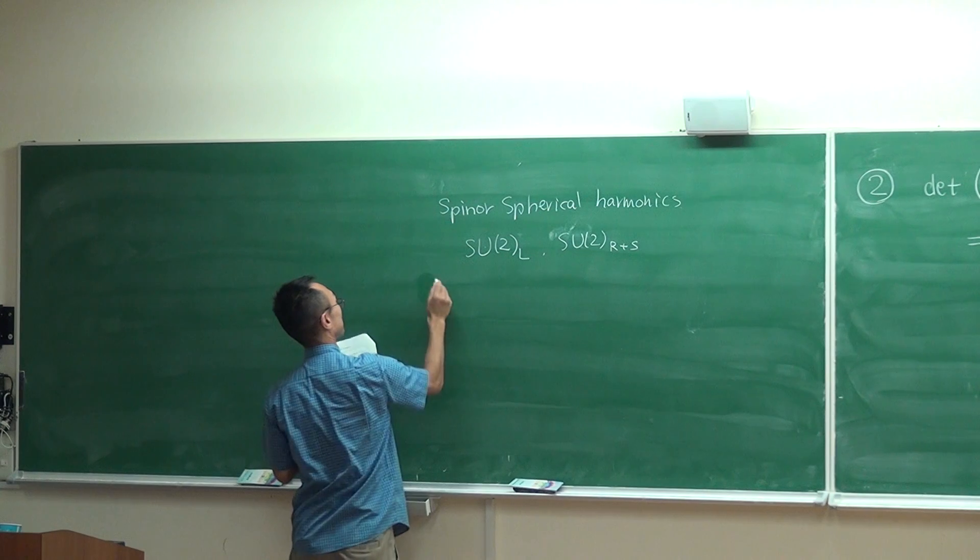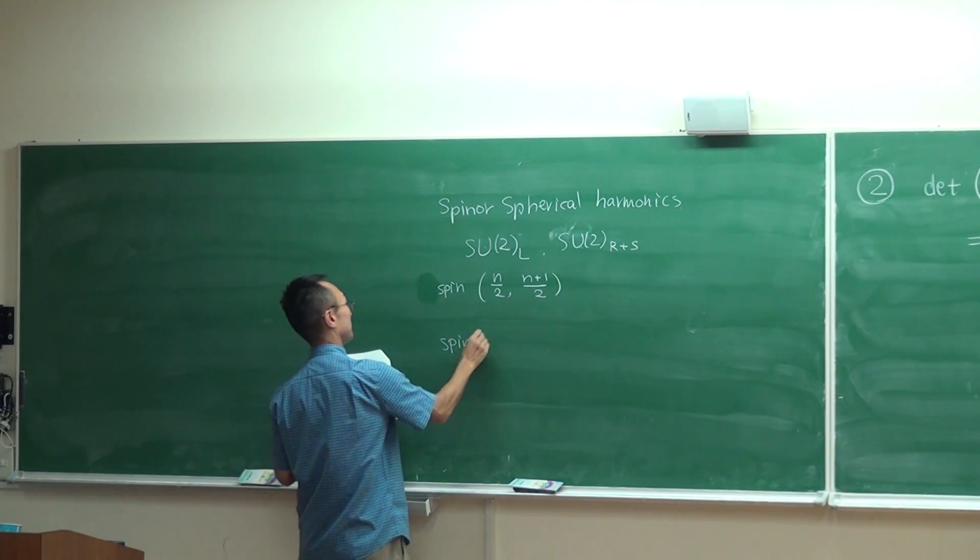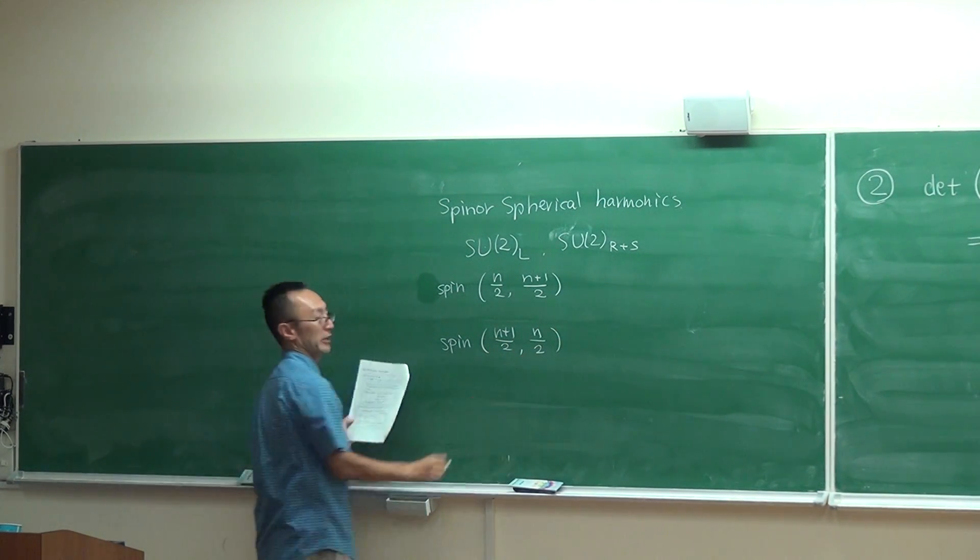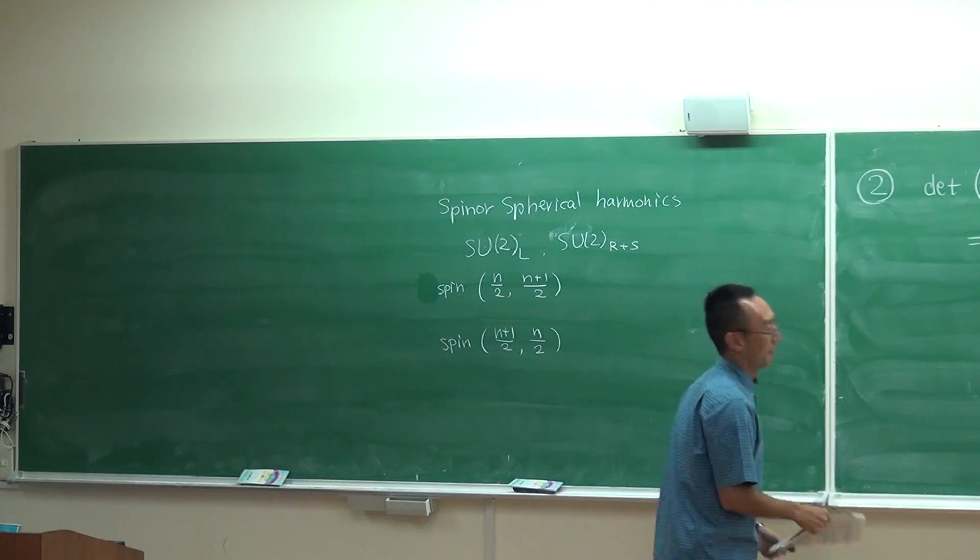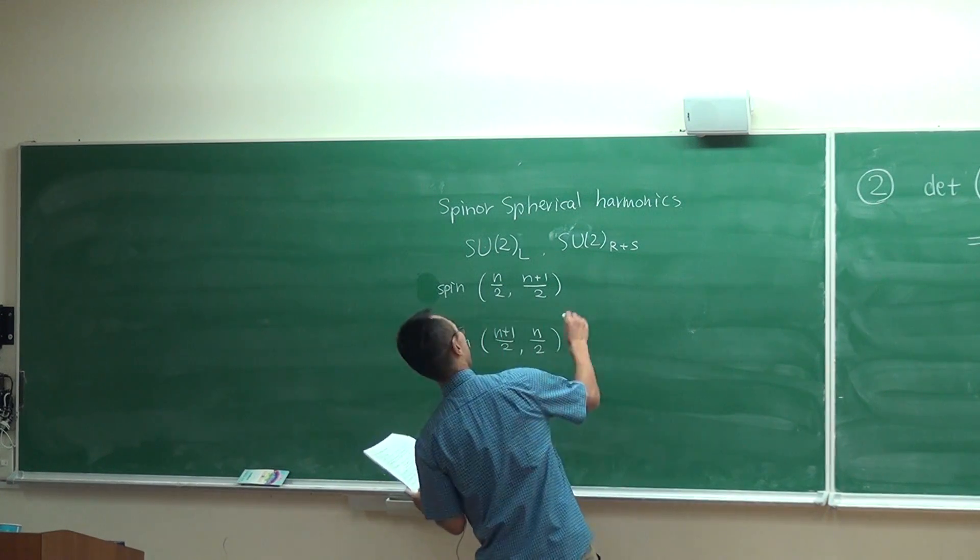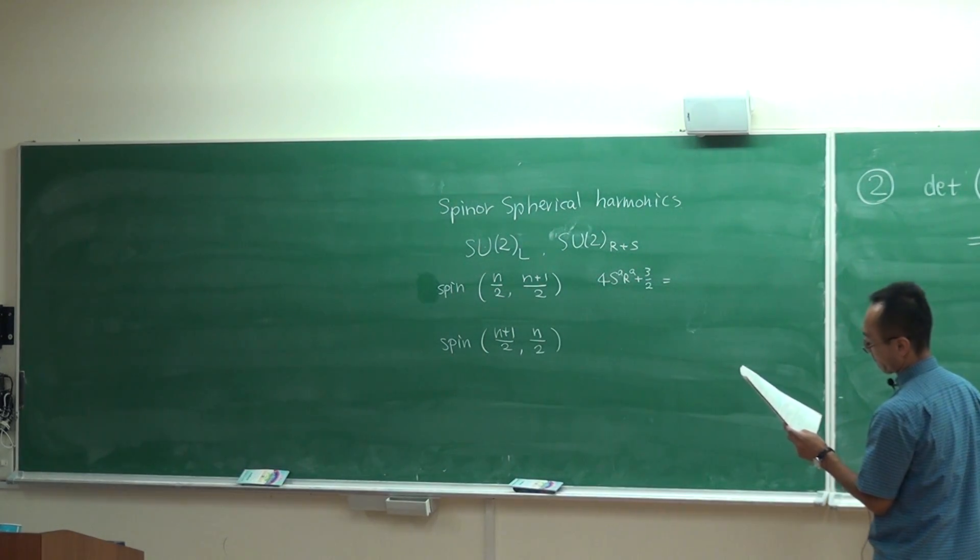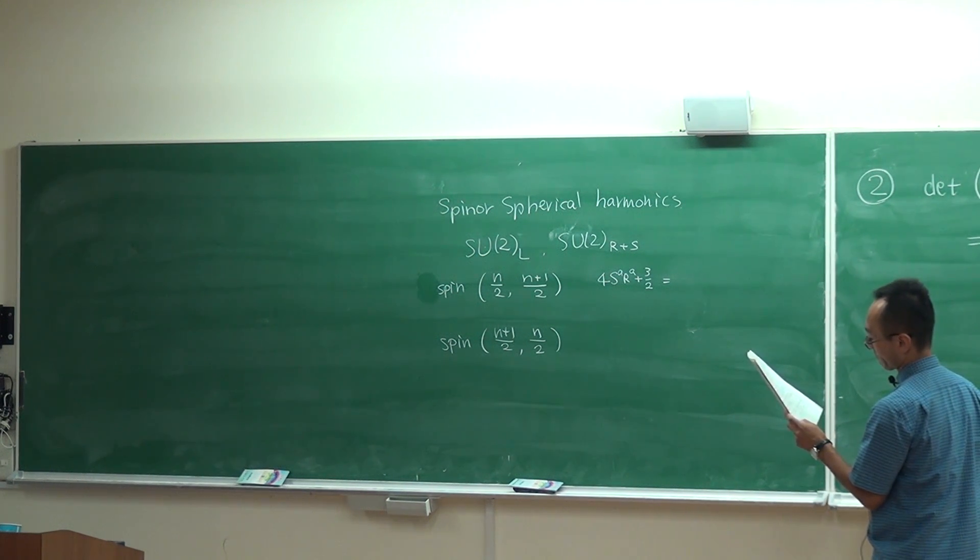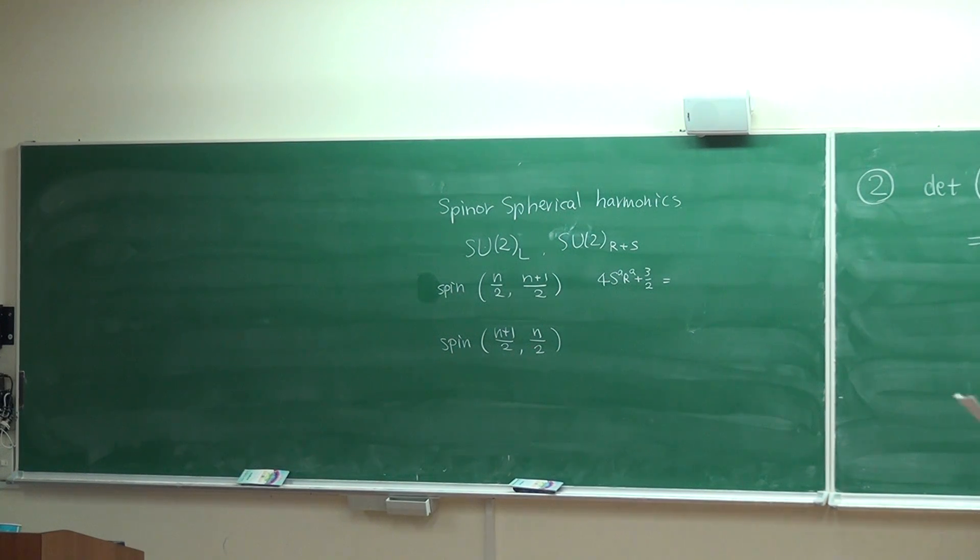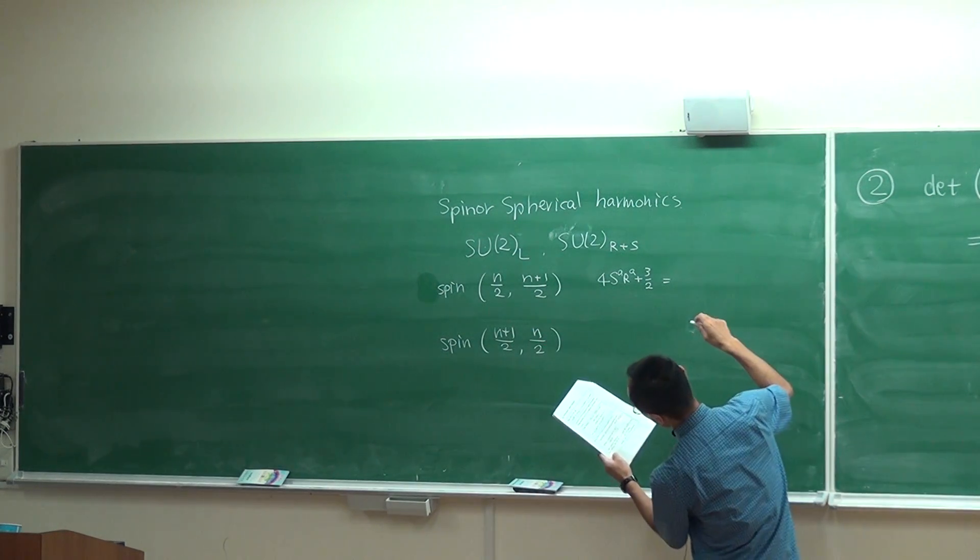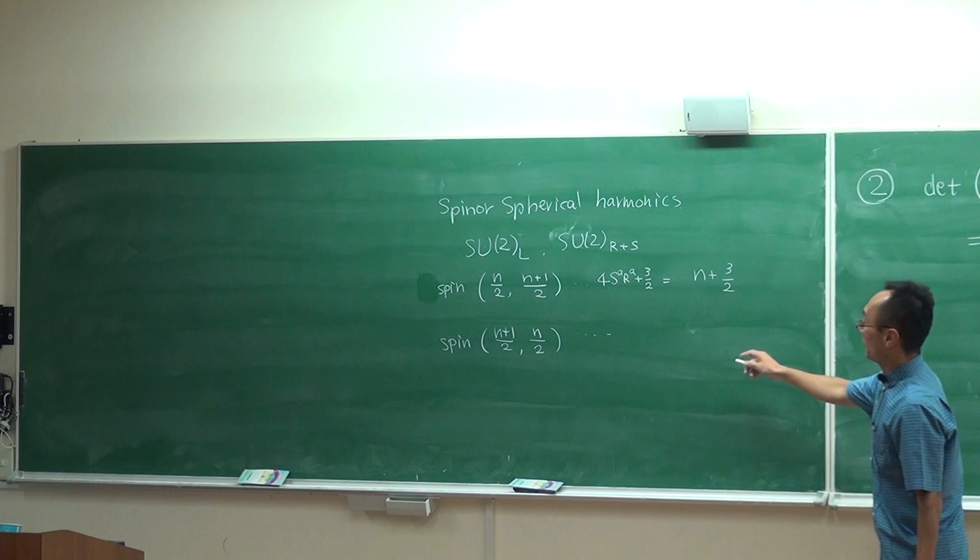There are two kinds of spherical harmonics. One is labeled by (1, N/2) and another kind is labeled by (N/2, 1). For each of them, the value of this operator can be very easily computed.